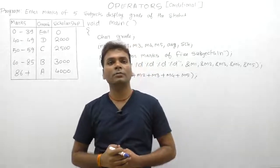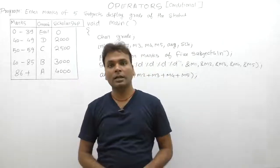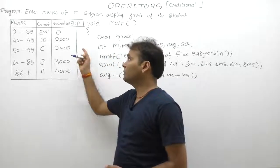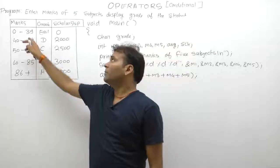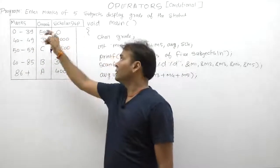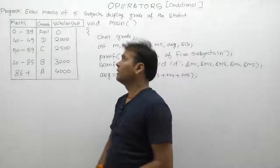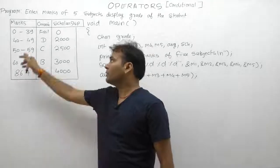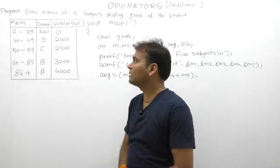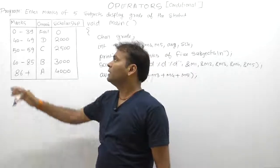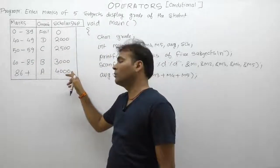Suppose we are having different ranges as the basis for providing scholarships to students. If any student's average marks are between 0 and 39, that's grade F, then the student gets no scholarship - 0. If a student's grade is D, then on the basis of grade D, the scholarship provided is 2000. If the range is 50-59, the scholarship is 2500. Similarly, 3000 or 4000 for higher ranges, and so on.